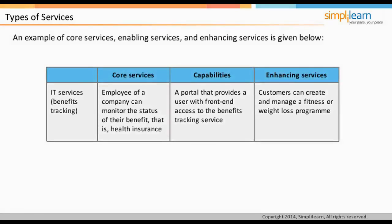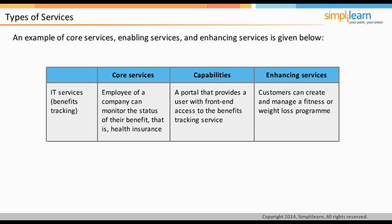Now let us consider another example. Suppose the employees of a company can monitor the status of their benefit, that is, health insurance. The company can come up with a portal that provides front-end access to the benefits tracking service — this is an enabling service. If the company can help the employees create and manage a fitness or weight loss program, then such a facility is considered as an enhancing service.